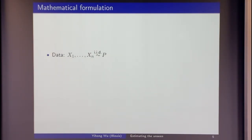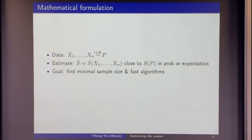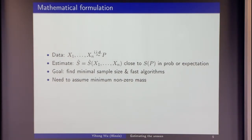Let's go to mathematics. The samples x₁ to xₙ, in the simplest i.i.d. case, are drawn from distribution P. I want to come up with some estimate, measurable from my data, that is close to the true support size — either in probability or in expectation — with minimum sample size. For example, a distribution with five non-zero masses.